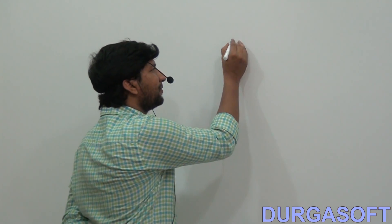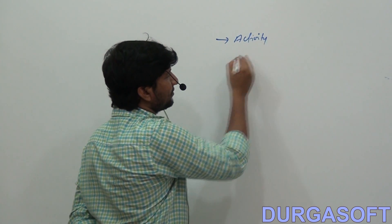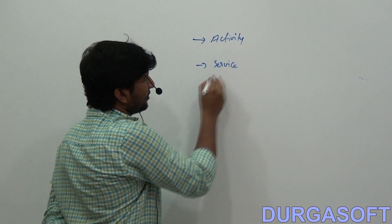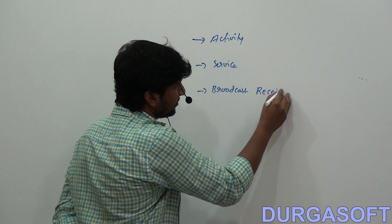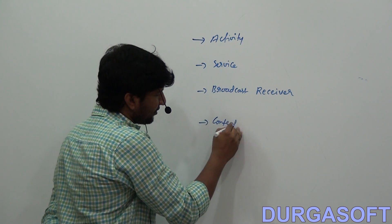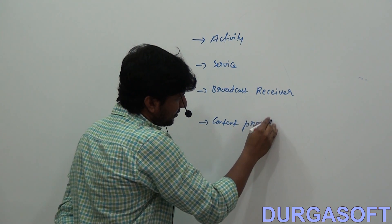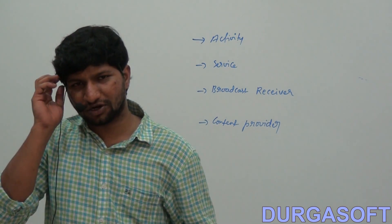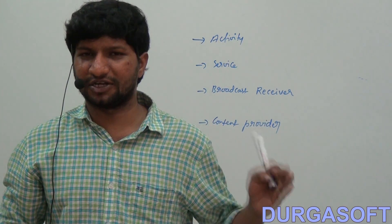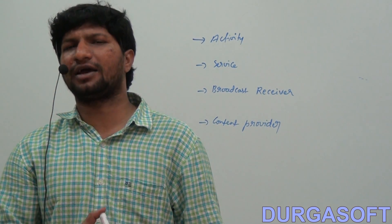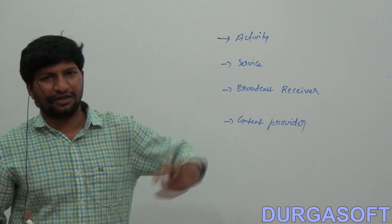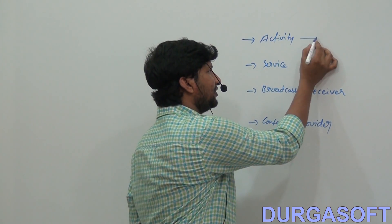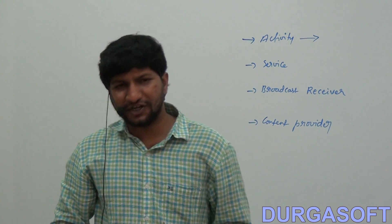The complete Android application development depends on four components. The four components are: Activity, Service, Broadcast Receiver, and Content Provider. These are the four major components of Android, and the complete Android application development depends on them.